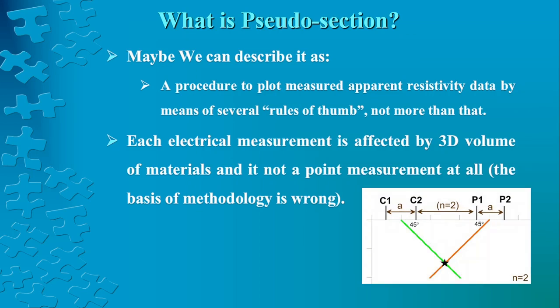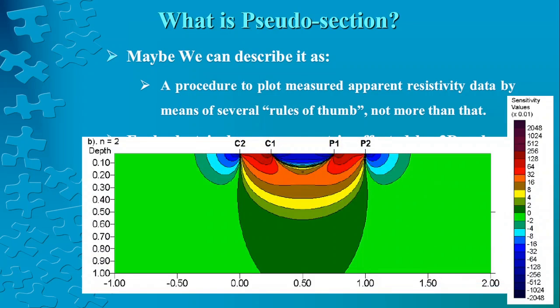I will describe an example to see it more clearly. This is what will be the n equals 2 for the dipole-dipole array C1, C2, P1, P2. This is the very old method for the 45 degree diagonals, and you see the location would be the cross-cutting diagonals coming from potential and current electrodes.